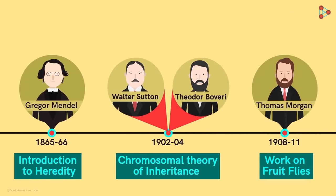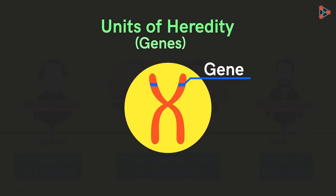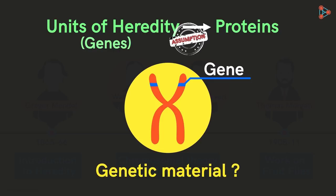We have seen the history of genetics until this time. Until this point, scientists believed that genes — the units of heredity — are majorly made up of proteins. In other words, the chemical nature of the genetic material was thought to be proteins. However, this wasn't really considered to be a fact; it was just an assumption. People were still trying to figure out what exactly the genetic material could be made up of.